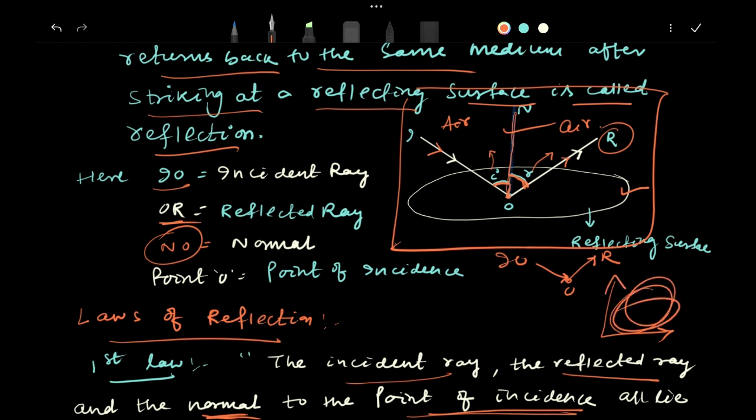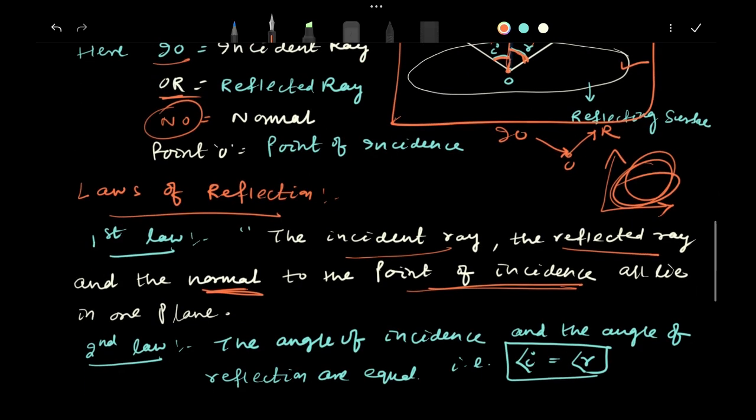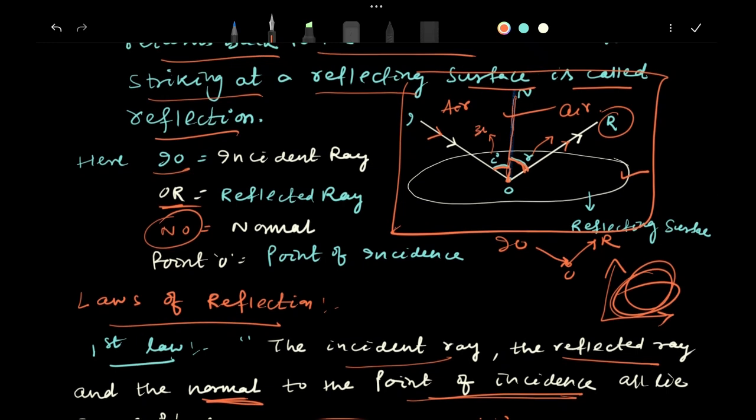The second law says the angle of incidence, which is your i, must be equal to the angle of reflection, which is your r. So if the light ray is coming with an angle of 30 degrees, it will always go with an angle of 30 degrees only, if the surface is polished.